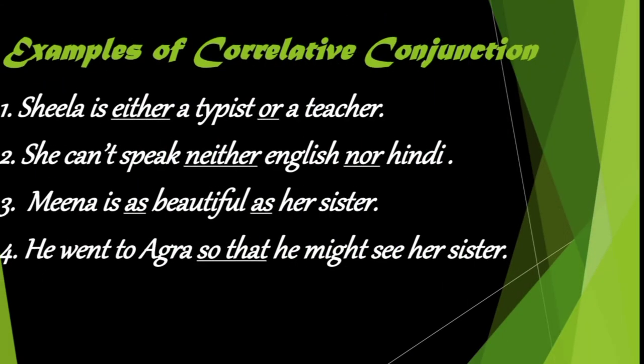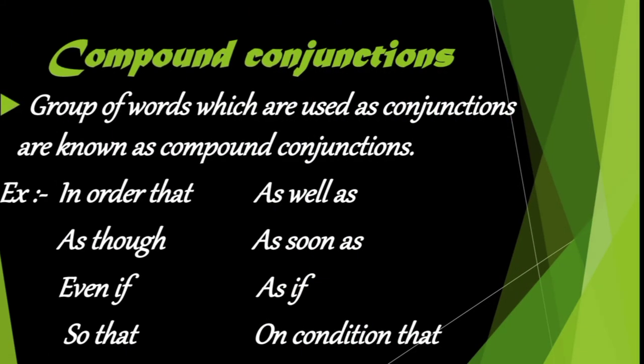Let us see some sentence examples of correlative conjunctions. First: 'Sheila is either a typist or a teacher.' Second: 'She can't speak neither English nor Hindi.' Third: 'Meena is as beautiful as her sister.' Fourth: 'He went to Agra so that he might see her sister.' The pairs either/or, neither/nor, as...as, and so that are the best examples of correlative conjunctions.